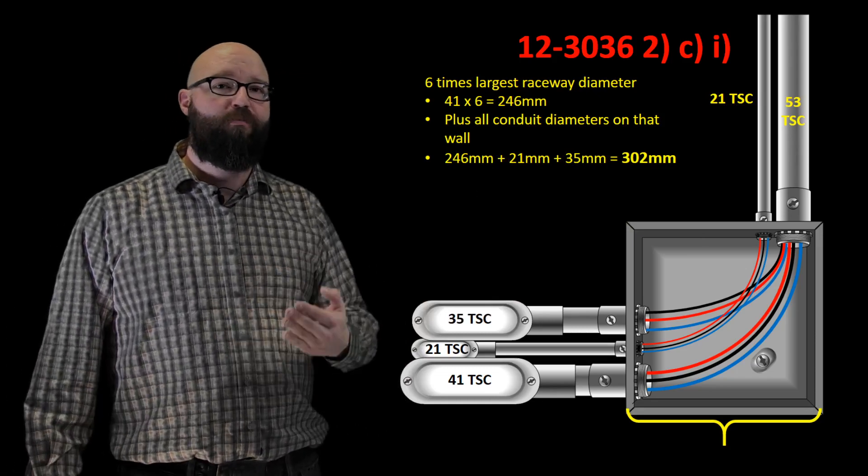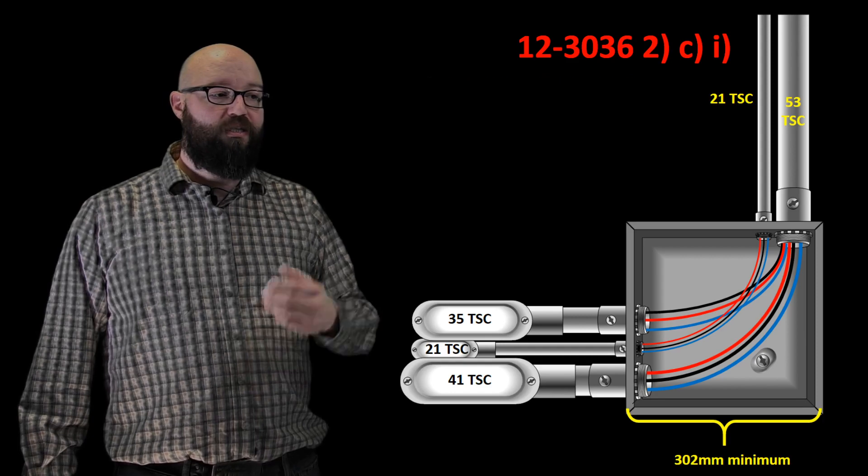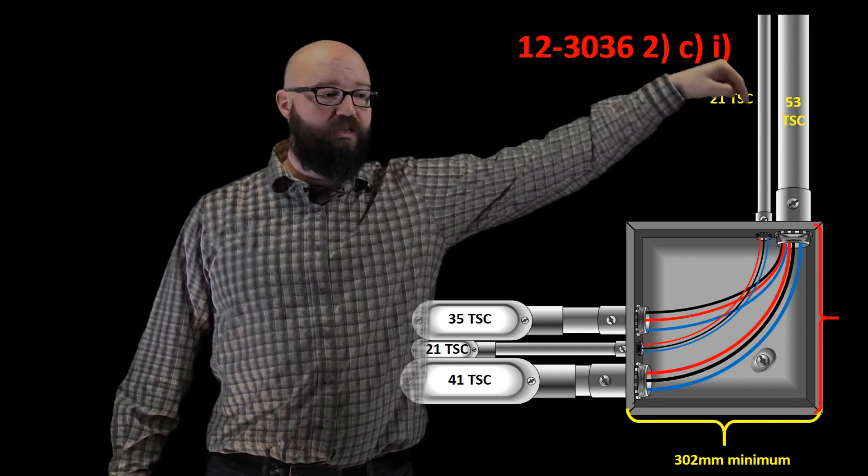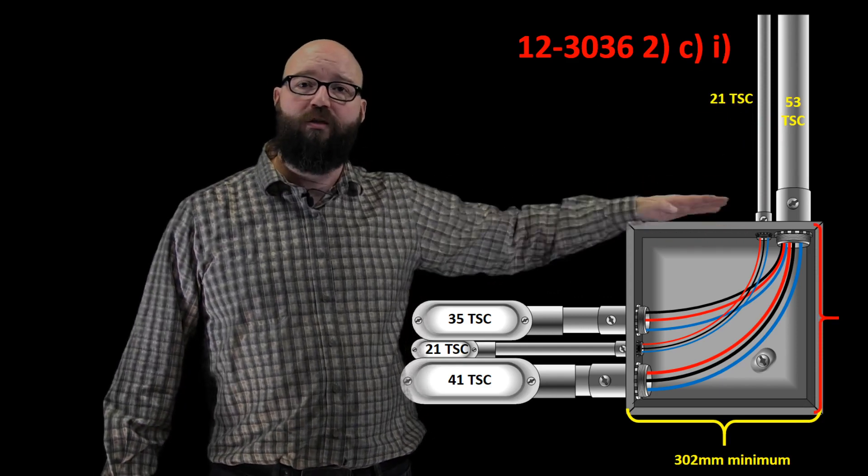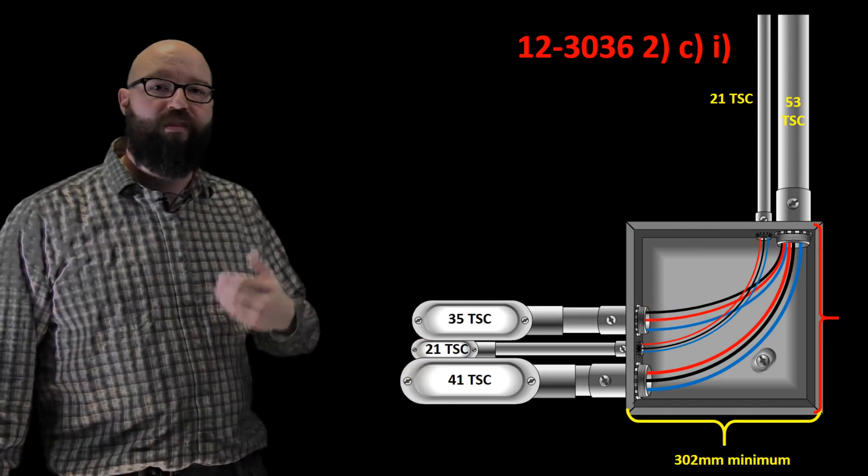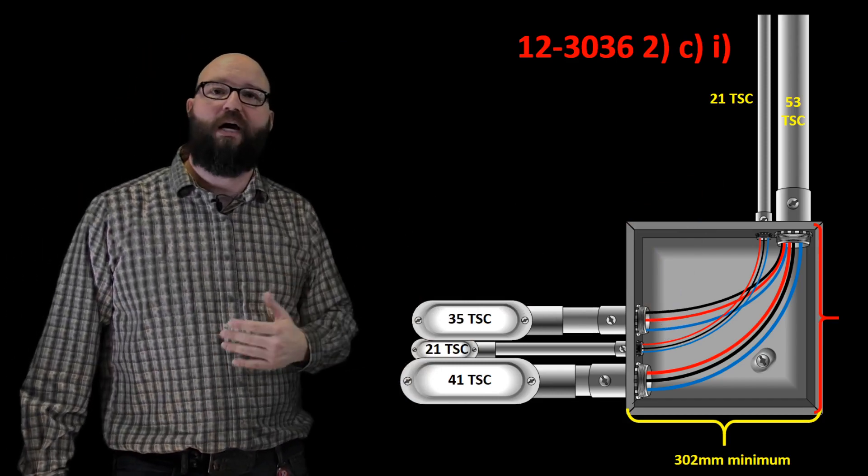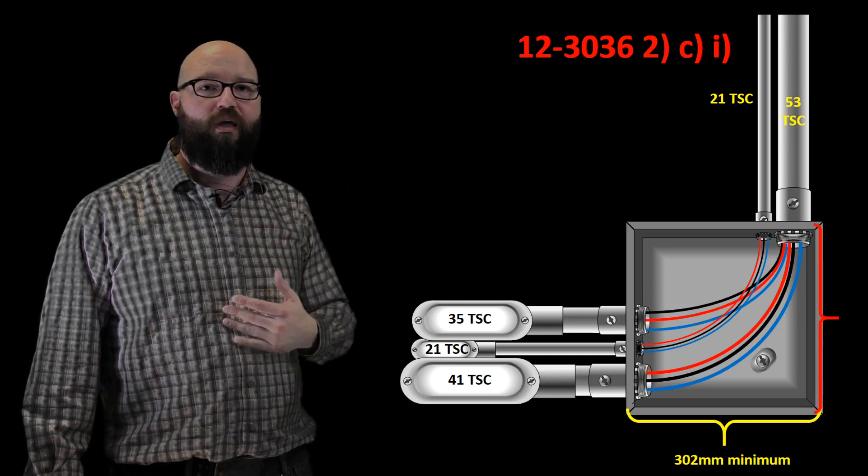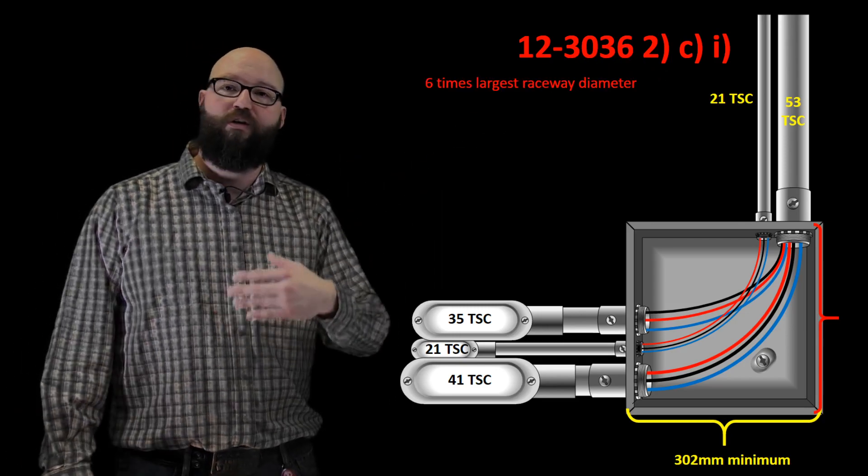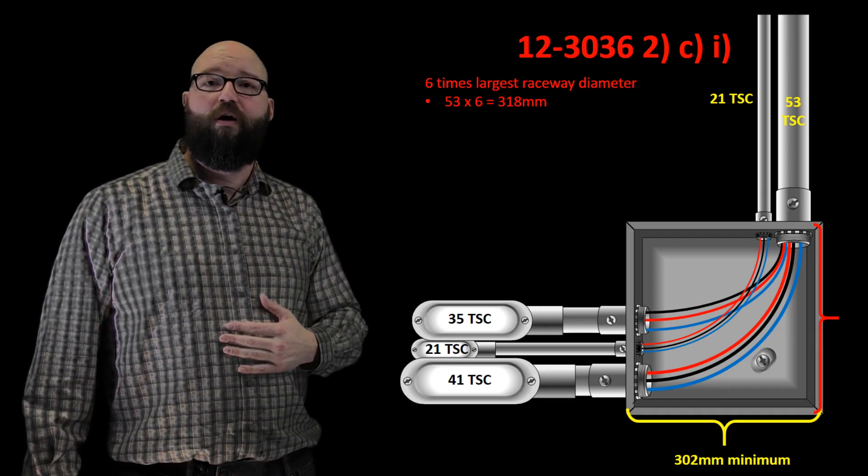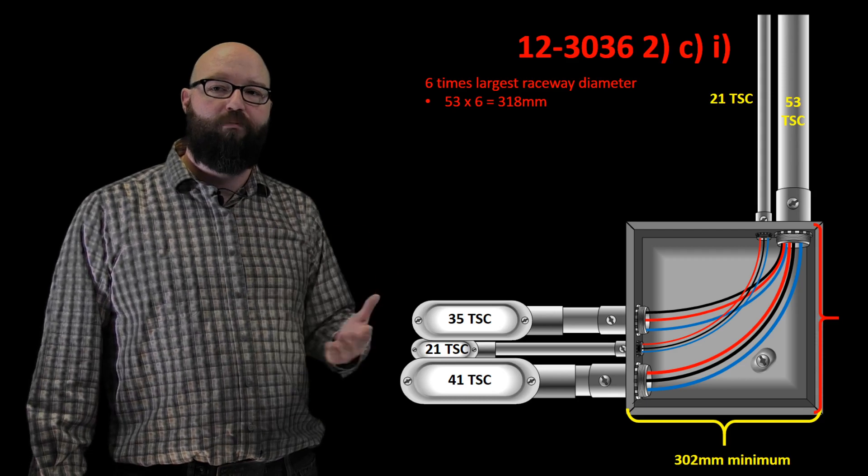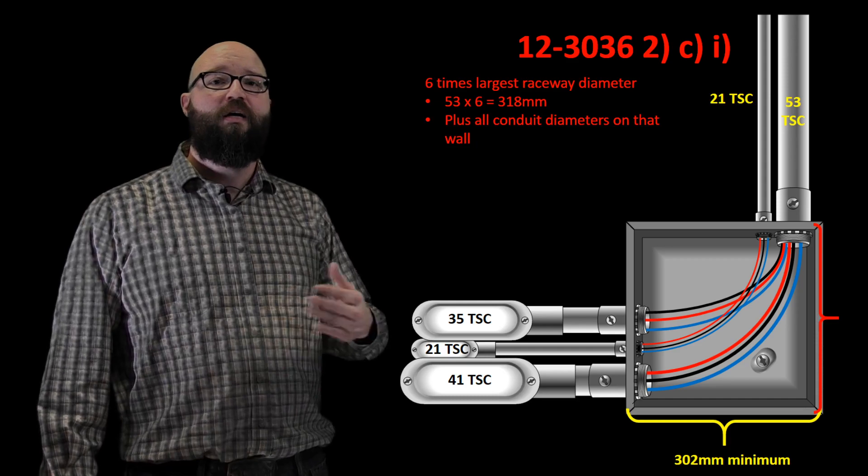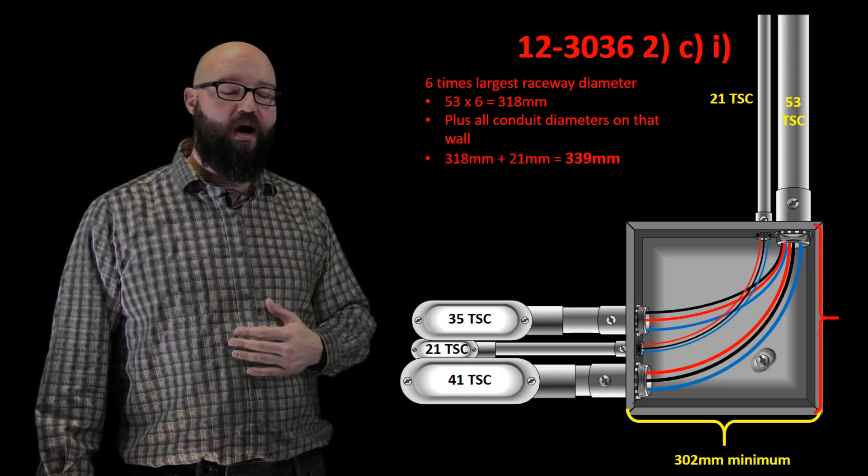We also have to take a look at the other dimension of the box as well. So in this case, if we take a look at the opposite, what we're looking at now, where these conductors enter, so this wall right here, what is the minimum distance to the opposite wall down there? That's what we're gonna take a look at next. We apply the exact same rule, it's just now we have our 21 trade size and our 53 trade size conduit that we're using in our calculation. So again, same thing, we're gonna use six times the largest trade size diameter, which in this case is actually 53. 53 times 6 gives us 318 plus that other 21 trade size conduit on there gives us a total on this now of 339.